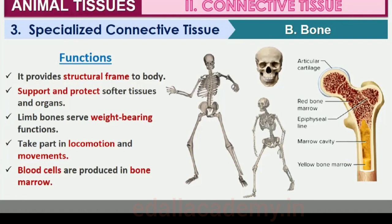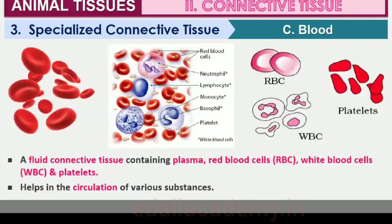Blood is a fluid connective tissue containing plasma, red blood cells (RBC), white blood cells (WBC), and platelets. It is the main circulating fluid that helps in the transport of various substances. You will learn more about blood in chapters 17 and 18.